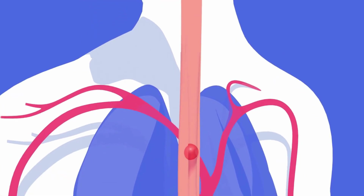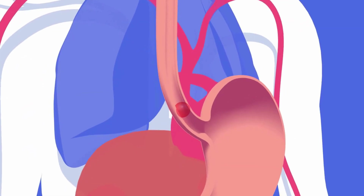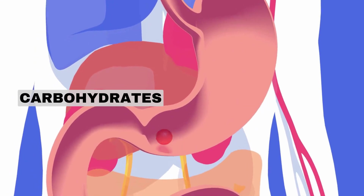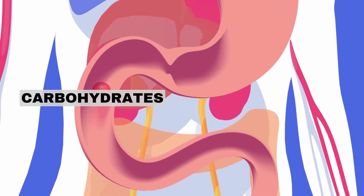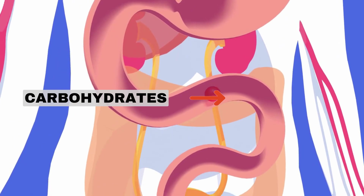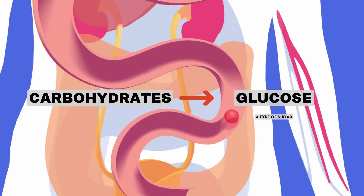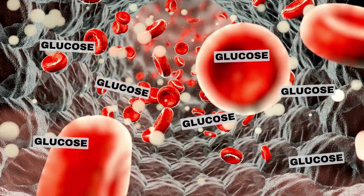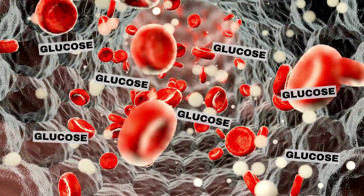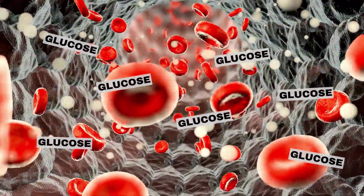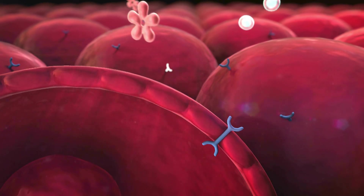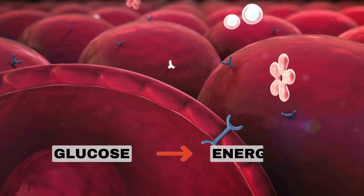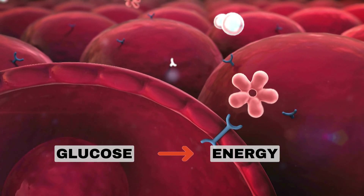The food we eat enters the stomach and the digestive system. Carbohydrates in this food are broken down into glucose, which is a type of sugar. Glucose enters the bloodstream and reaches the cells.